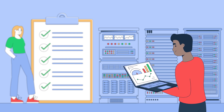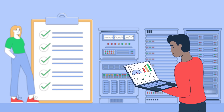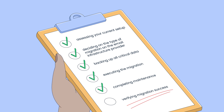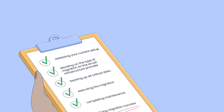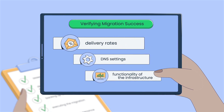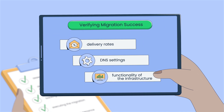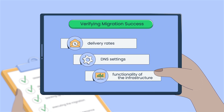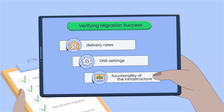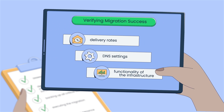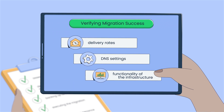After the migration, it's time for step 5: verifying the migration's success. During this step, it's essential that you make sure everything flows correctly and all configurations are in place. So check delivery rates, DNS settings, and the overall functionality of the infrastructure. You can also make use of feedback by asking your team to report any disruptions or usability issues.